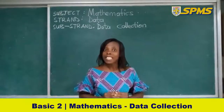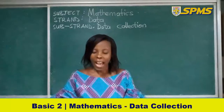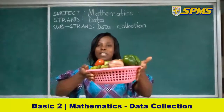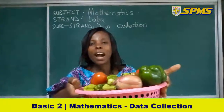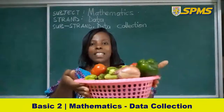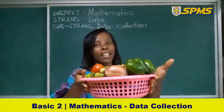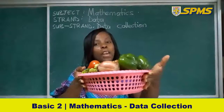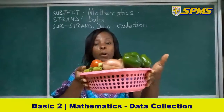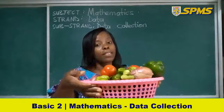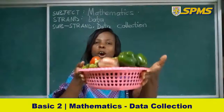So that would be giving us data on vegetables. I have a basket of vegetables. Can you see the vegetables? Do we have only one vegetable in the basket? No — different kinds of vegetables put together in a basket. We have green pepper, sweet pepper, hot pepper, tomatoes. So this is a collection of vegetables.